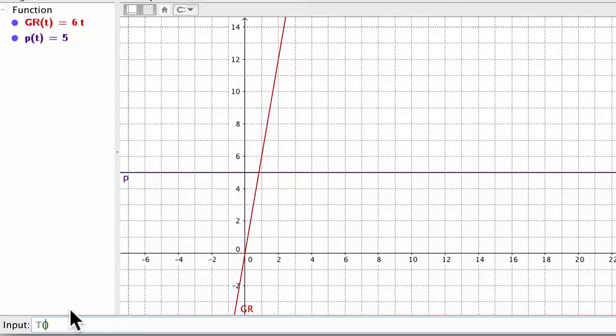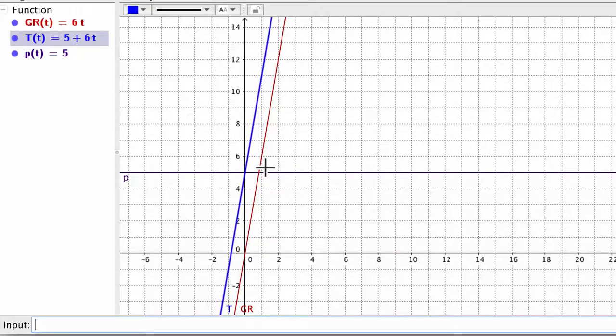Now, the third function was the total as a function of time, and that equals the sum of these two functions, which is 5 plus 6t. So it's essentially the same as the red line, only 5 higher. At the beginning, it's 0. It's already at 5. At 1, it's at not 6, but 6 plus 5, all the way up here at 11, which is the 5 purple pixels and the green and red pixels all together.